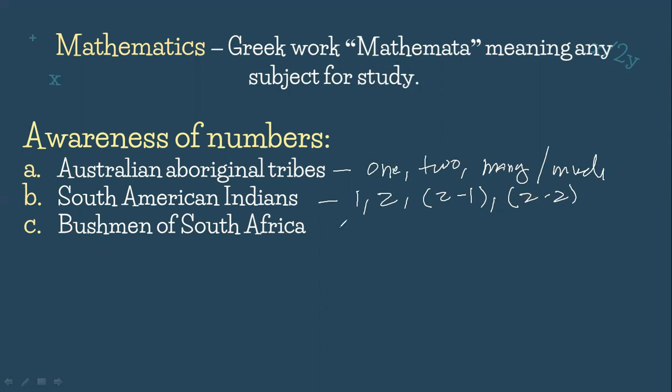For the Bushmen of South America, they also had the concept that two plus two plus two plus two plus two is actually equal to ten. And if you notice, they already had markings to count how many days had passed in a particular location. Those markings are what we now call tallies.